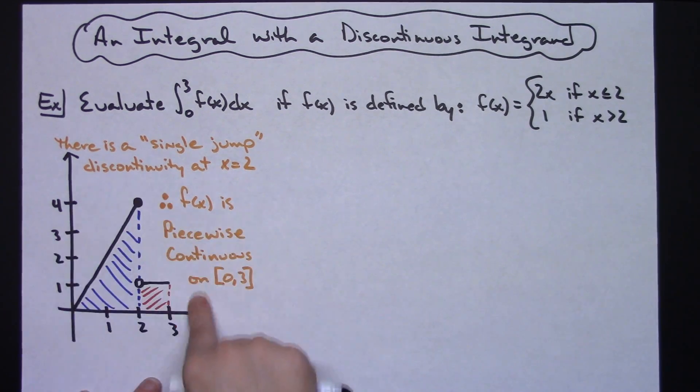Now, taking a look at this picture, we can see that there is a single jump discontinuity right there at x equals 2. And for that reason, it is common to say that this function f of x is piecewise continuous on the closed interval from 0 to 3.